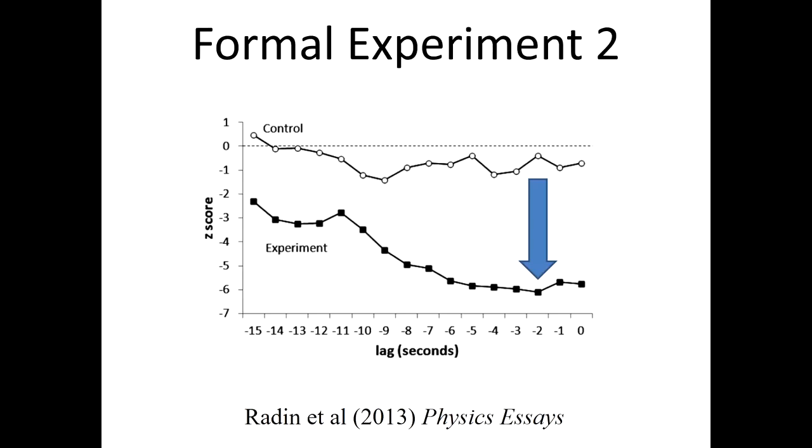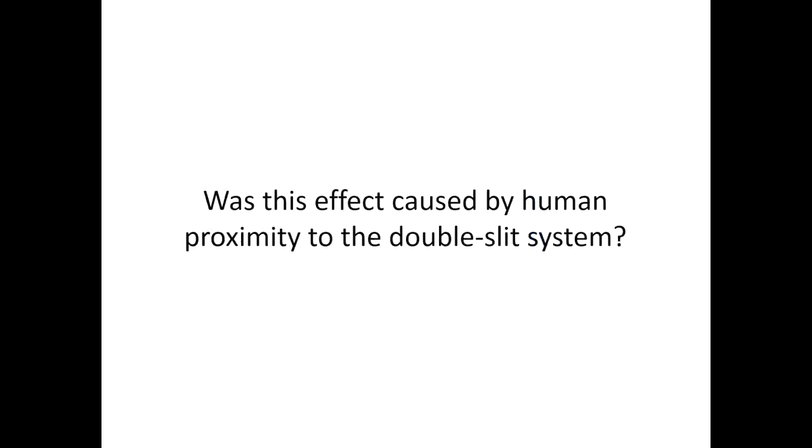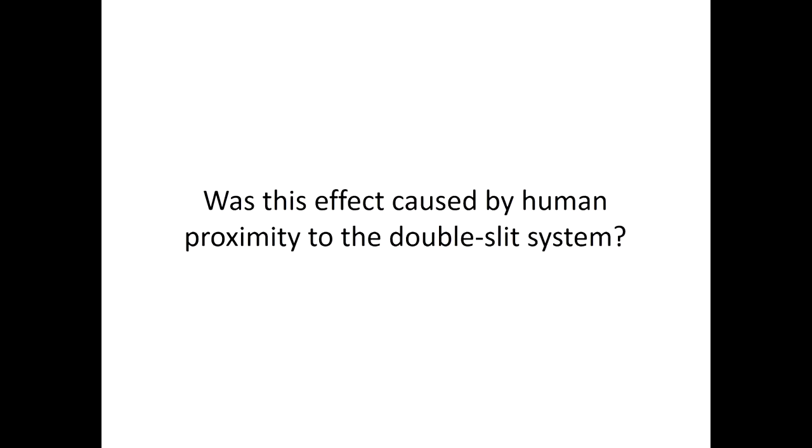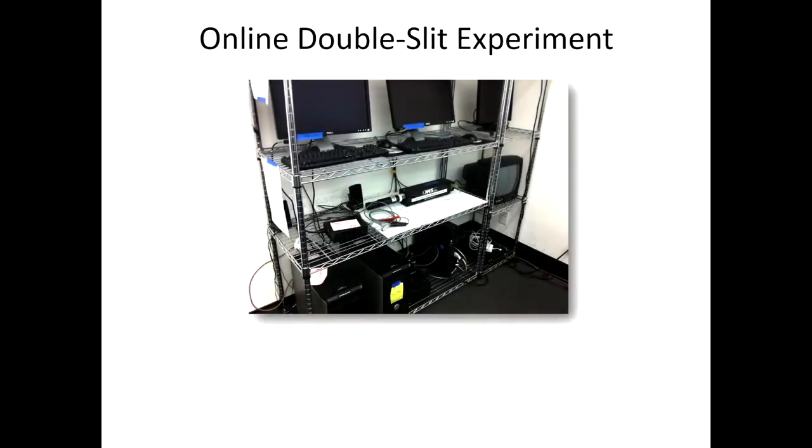So after doing the second formal experiment, again getting over a five sigma result, we got suspicious. So maybe this was caused simply by proximity of the human body. Even though it was two meters away from the double set system, we figured that maybe when somebody is asked to concentrate, they lean forward slightly. And for those of you who have worked with interferometers, you know that they're exquisitely sensitive to everything, so we thought maybe the temperature change from a body one inch closer versus one inch away would be sufficient to make this result. So we decided to put the entire thing on the Internet so we'd be sure that we could rigorously separate people by distance.